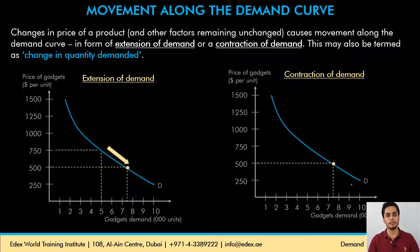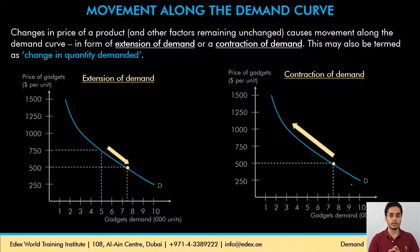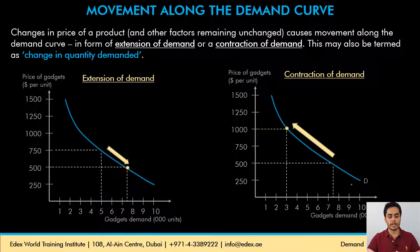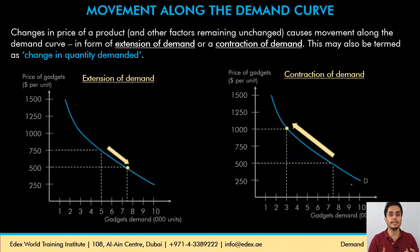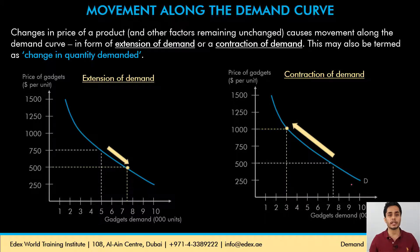Contraction of demand: if the price is currently $500 and consumers are buying 7500 gadgets per year, and the price rises to $1000, consumers reduce their quantity to 3000 gadgets per year — that is contraction of demand. When price rises, quantity demanded falls. Importantly, extension and contraction of demand are only a movement along the existing demand curve — the curve itself does not change. This occurs only due to changes in the price of the product; all other factors remain constant.